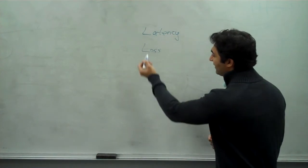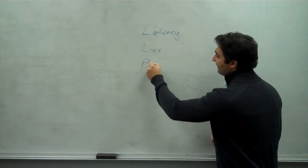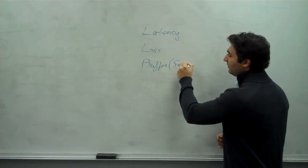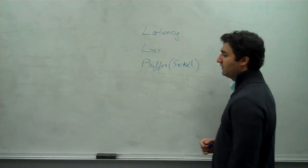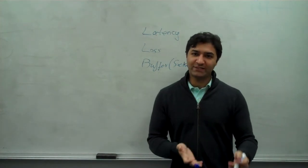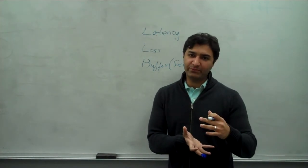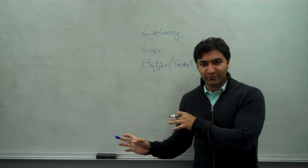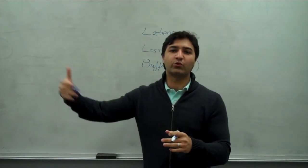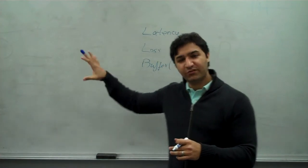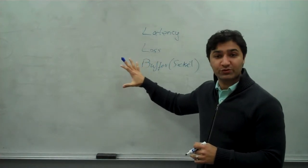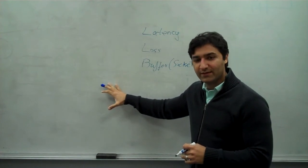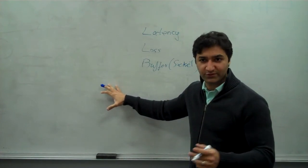The third one is what they call just a buffer or socket buffer. This is a function of how much data can I collect from the application before I send it out there. The larger the buffer, the more data you can have on the wire. So these are three things that people talk about when they talk about issues.